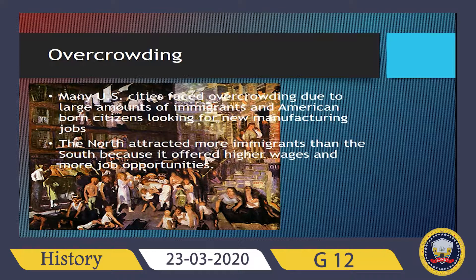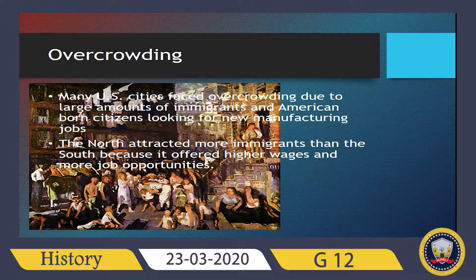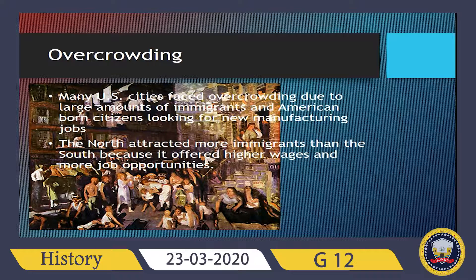Overcrowding: many United States cities faced overcrowding due to the large number of immigrants and American-born citizens looking for new manufacturing jobs. The North attracted more immigrants than the South because it offered higher wages and more job opportunities. Northern America was much more developed than the South, which is why it attracted more people. People in the South were still dependent on their farms and were not as developed in terms of the Industrial Revolution.